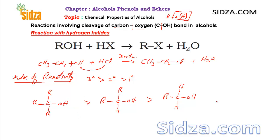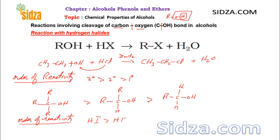Among the halogen acids, the order of reactivity is: HI is more reactive than HBr, which is more reactive than HCl, which is more reactive than HF.